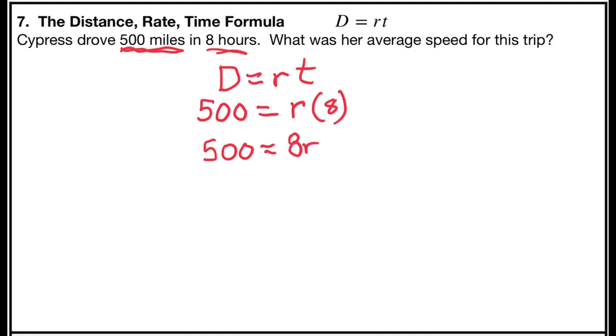and then we'll solve the equation. We'll divide both sides by 8. 8 divided by 8 is 1r, or as some people say, it cancels out. And 500 divided by 8 is 62.5.